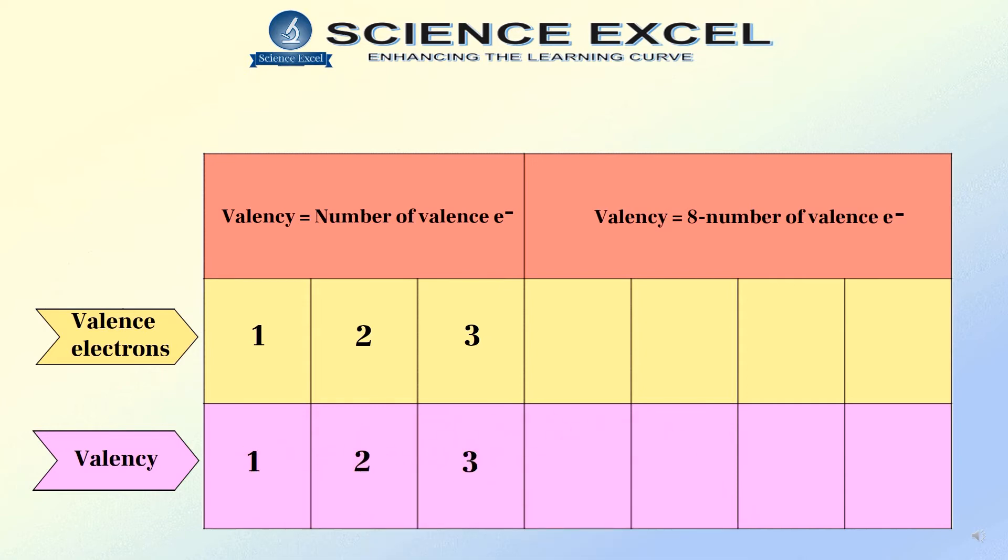And if the atoms have 4, 5, 6, or 7 valence electrons, then their valencies can be calculated by subtracting the number of valence electrons from 8. So, we get the valencies as 4, 3, 2, and 1.